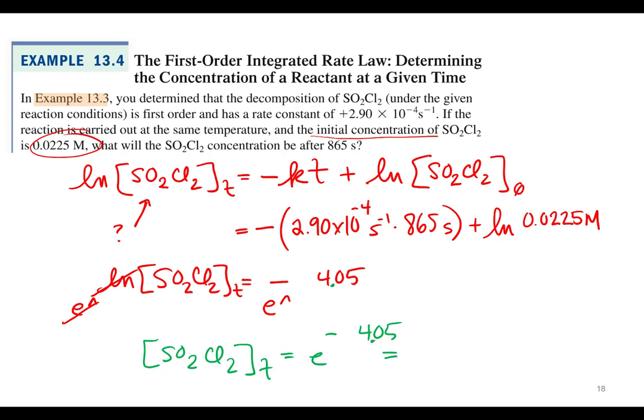Okay, so we'll be able to check. So let's take the exponentiate of that, so e to the negative 4.05. That's usually your second or your shift natural log, right? Negative 4.05, I'm getting 0.0174.